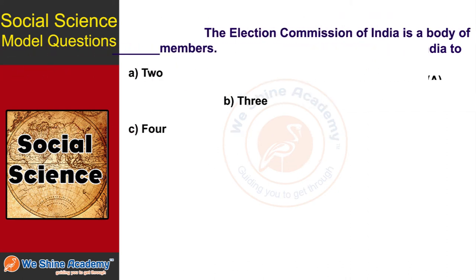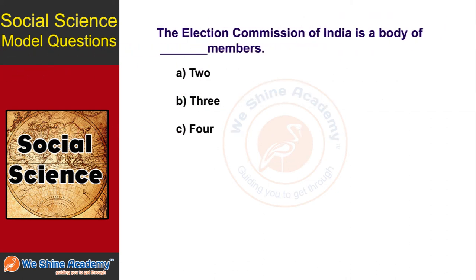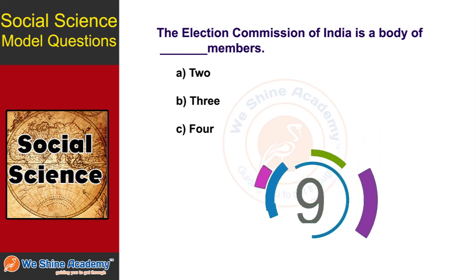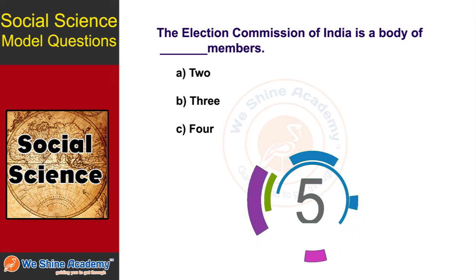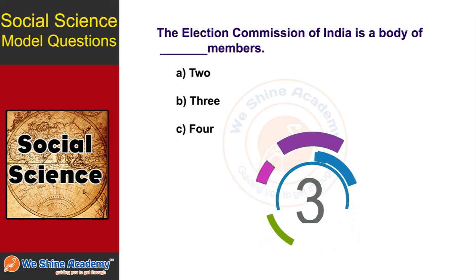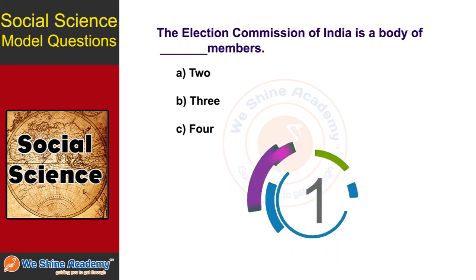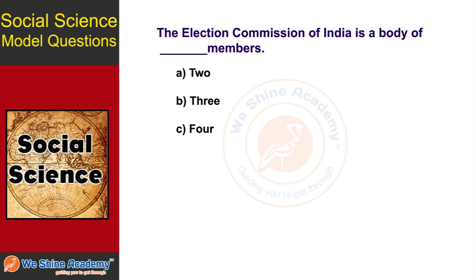The next question is: The Election Commission of India consists of how many members? The answer is Option E, 3. India's Election Commission has 3 members.